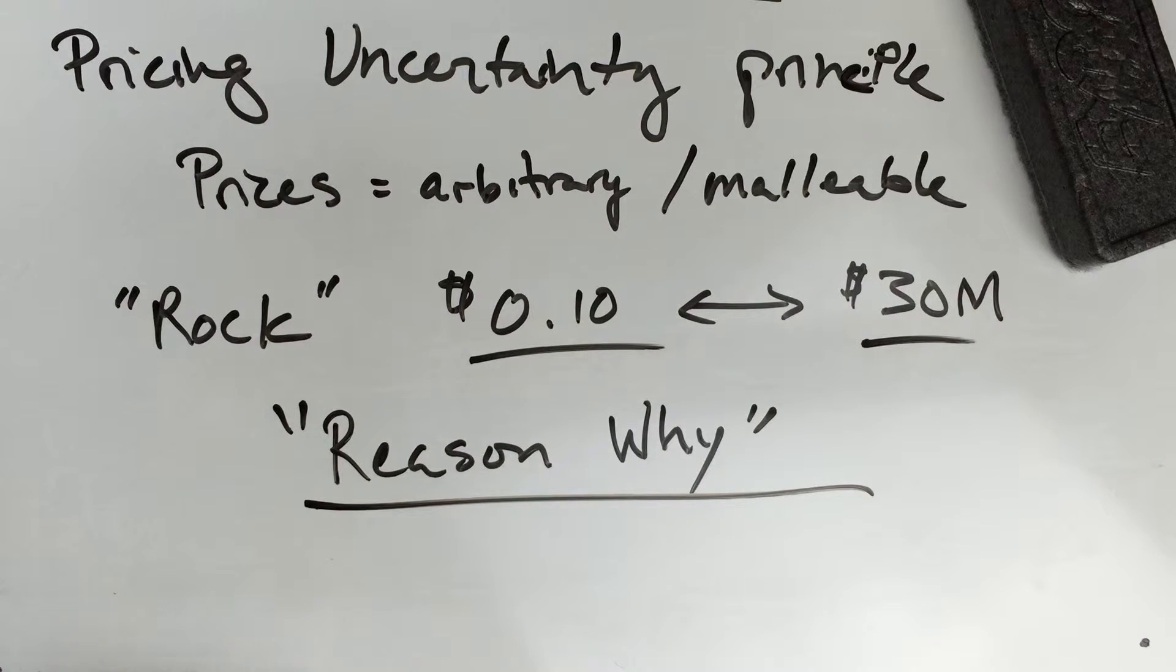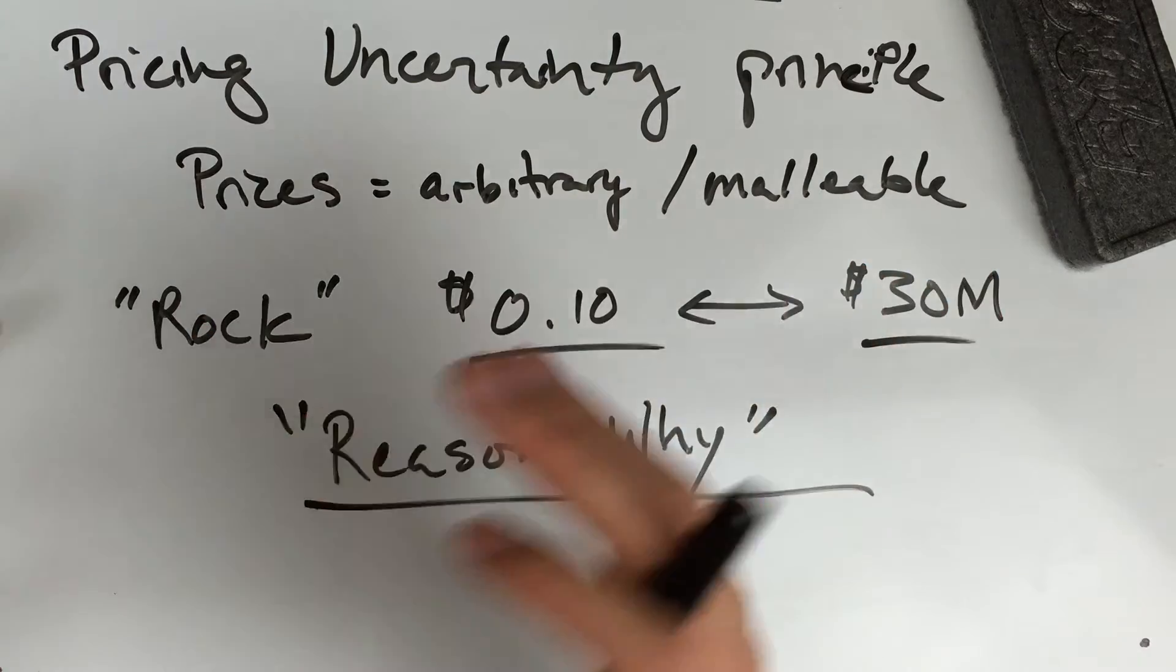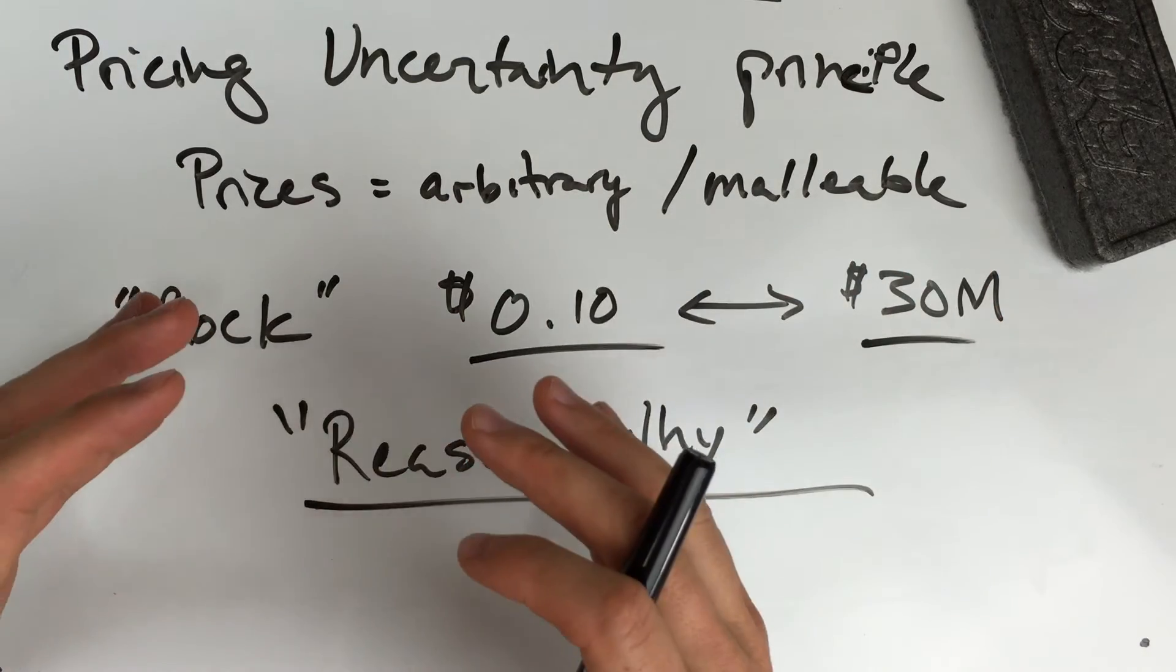This often comes into a supply and demand thing, but I think the main takeaway here is that prices where transactions actually occur are sort of set by the market on both sides—where a transaction can actually happen.